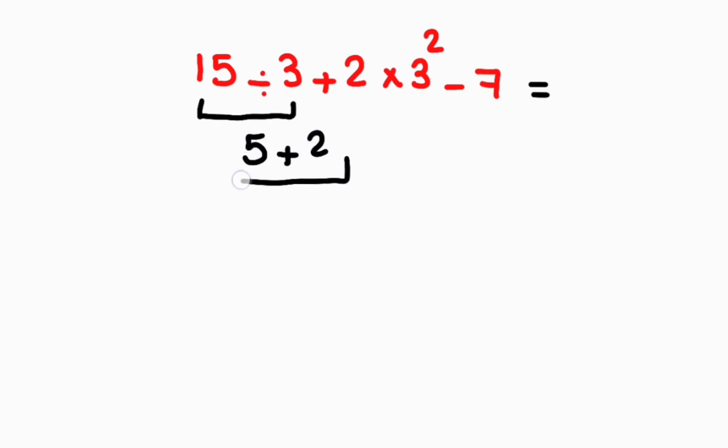5 plus 2 gives us 7. 7 times 3 to the power of 2—3 squared is 9—gives us 63. And 63 minus 7 gives us 56. But this answer is not correct according to the rules of mathematics, PEMDAS.